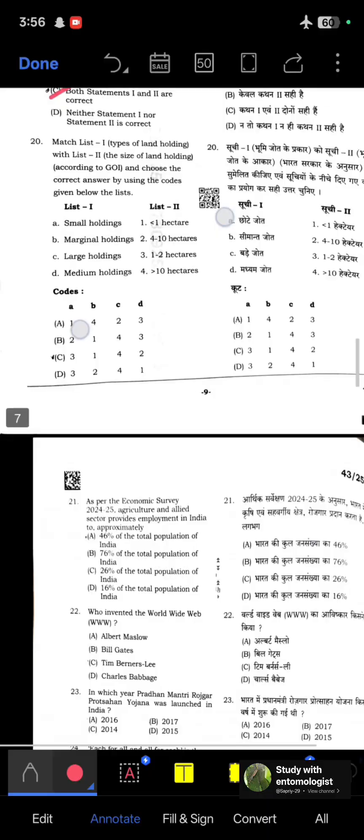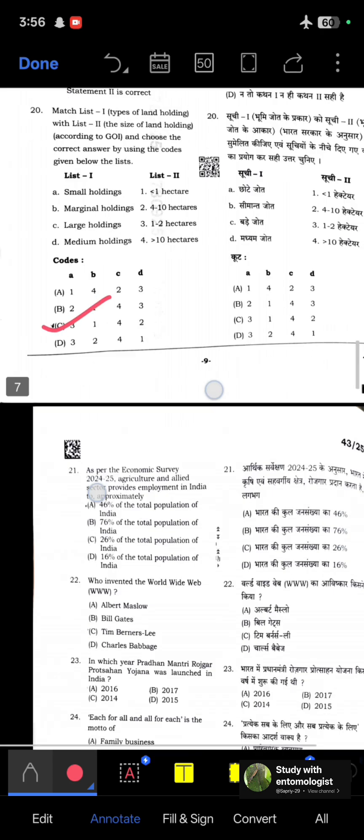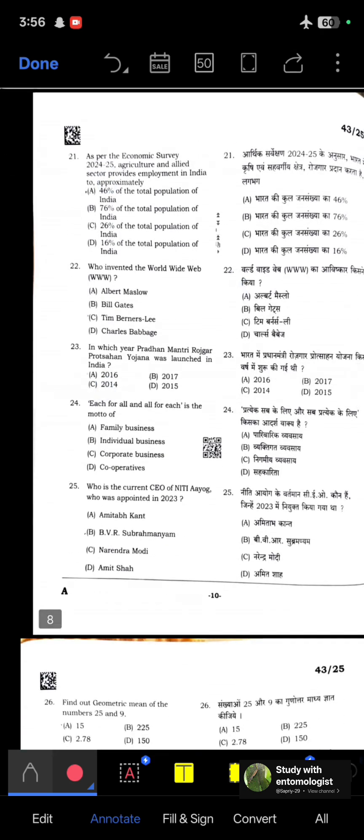Match list one, types of land holding, with list two, the size of land holding according to Government of India. Small holdings are 1 to 2 hectares, marginal holdings are less than 1 hectare, large holdings are greater than 10 hectares, and medium holdings are 4 to 10 hectares. Option C is correct. As per the Economic Survey 2024-25, agriculture and allied sector provides employment to approximately 46% of the total population of India.